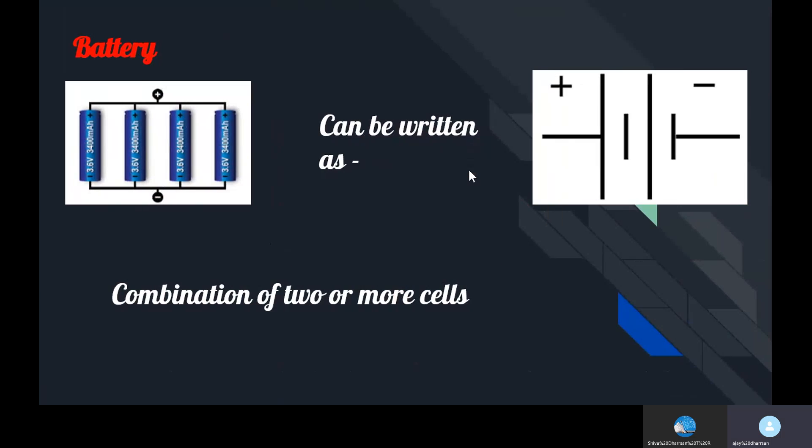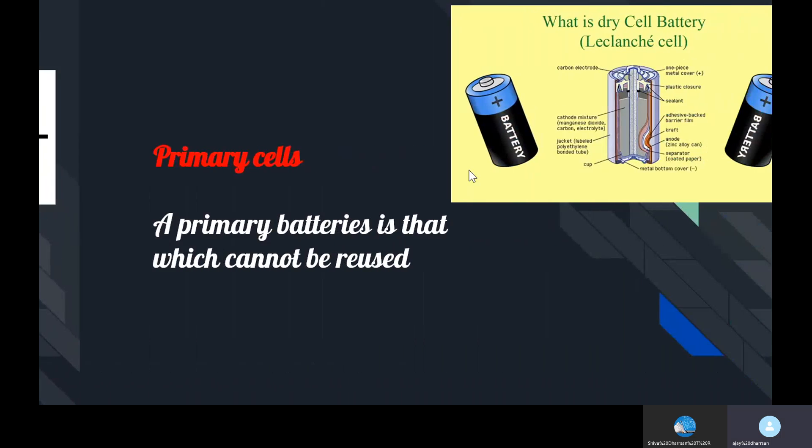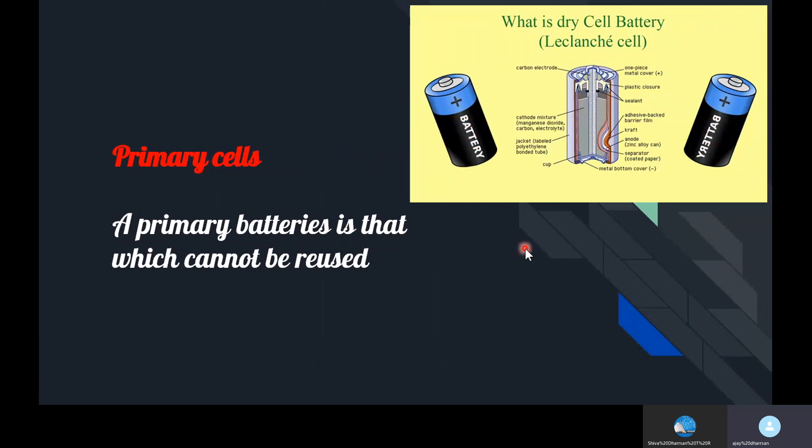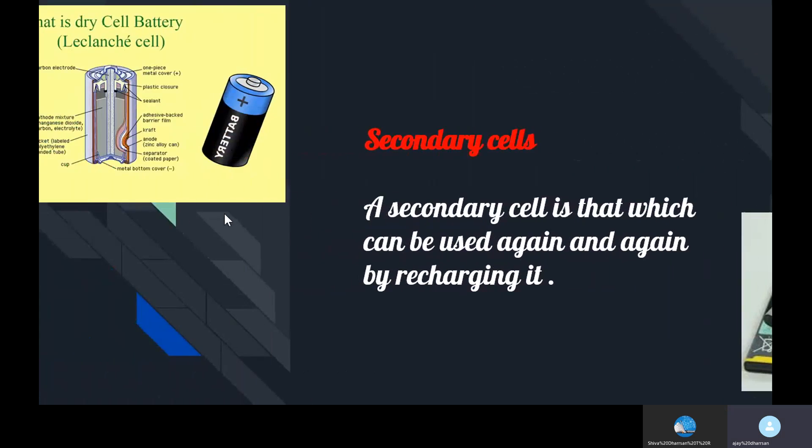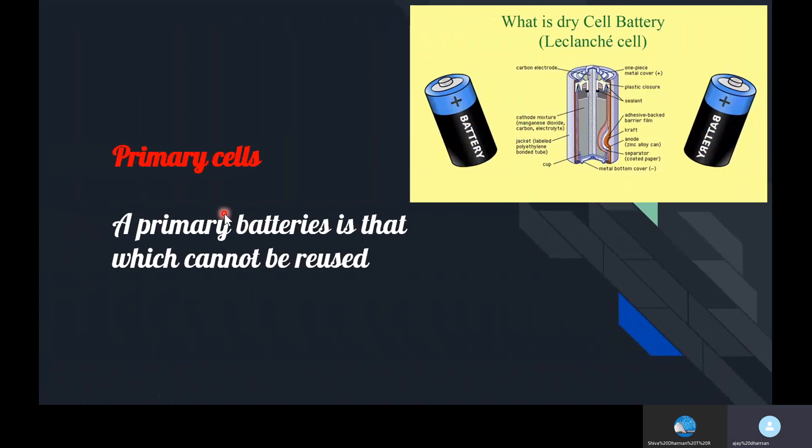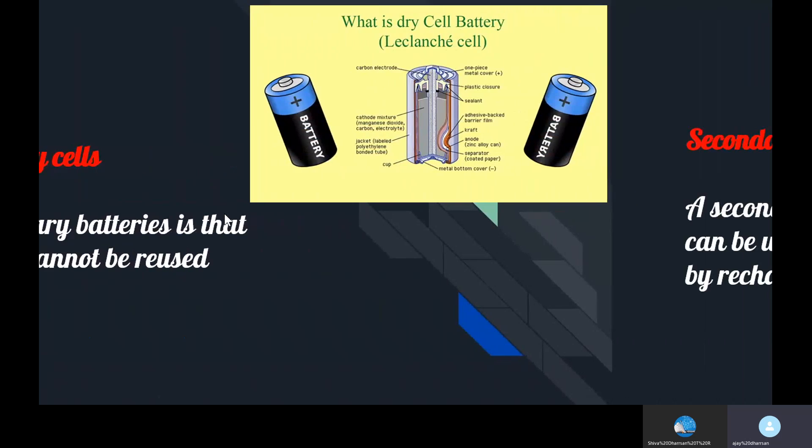They are of two types: primary cells and secondary cells. Primary battery cannot be reused and the examples are dry cell, Daniel cell, and many more. For activities we prefer dry cell and it is a type of primary cell. It cannot be reused.